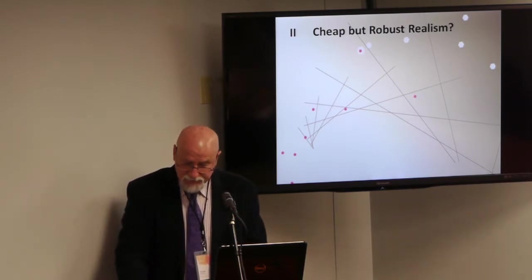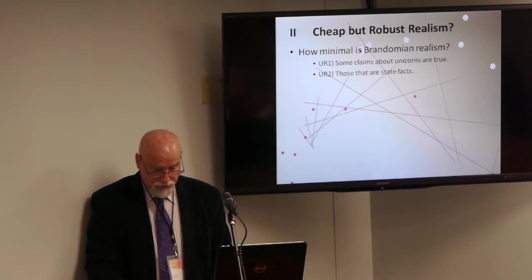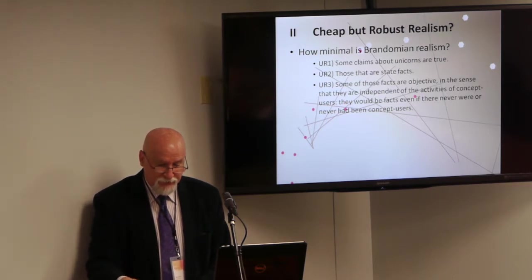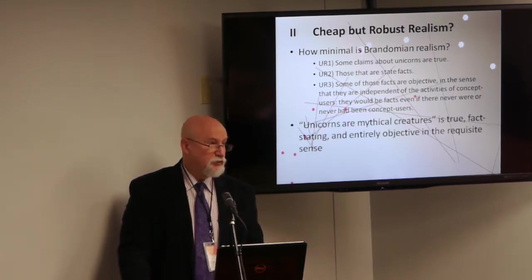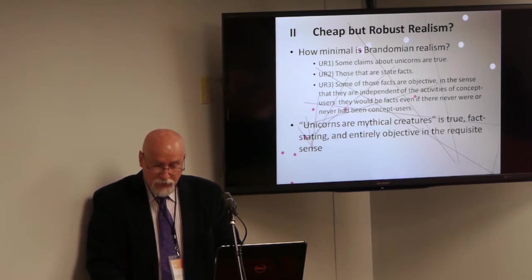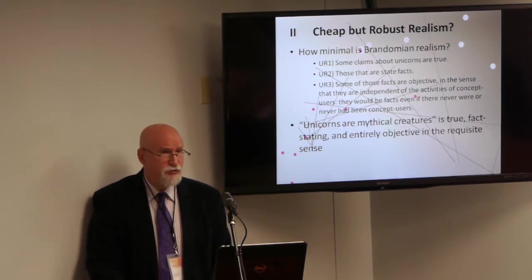So the kind of realism we looked at seems, as I said, minimal. It is extremely permissive. So consider some claims about unicorns are true, those that are state facts, and some of those facts are objective in the sense that they are independent of the activities of concept users. They would be facts, even if there never were or never had been concept users. I take it that all these principles of unicorn realism are true, for unicorns are indeed mythical creatures. That's a true fact stating and entirely objective claim. Yet, unicorn realism is, I think, not widely endorsed in the profession. If the existence of any true objective claims about something or using some qualifier is sufficient for realism, then the existence of true objective claims of non-existence would seem to suffice to establish reality in the same breath that they deny existence.